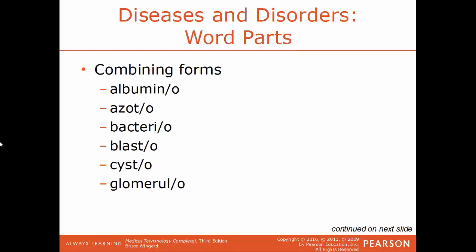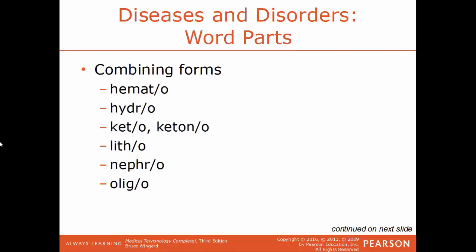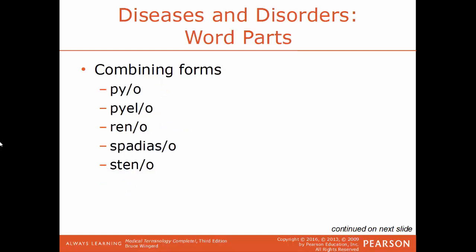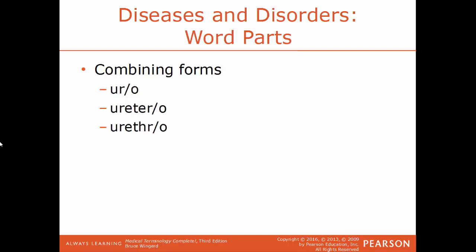Some common combining forms: albumino means protein; azato means nitrogen or urea; bacterio means bacteria; blasto means a forming cell; cysto means a cyst or fluid-filled sac; glomerulo is a reference to the glomerulus, the filtering unit of the kidney; hemato means blood; hydro means water; keto or ketono is a reference to ketones or acetones; litho means stone; nephro means kidney; oligo means a few or a scant amount; pio means pus; pylo means the renal pelvis; reno means the kidney; steno is a reference to constricting or narrowing; uro is a reference to urine; uretero is a reference to the ureters; and urethro is a reference to the urethra.